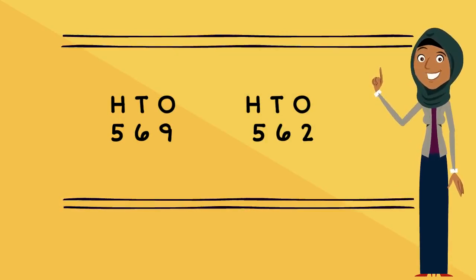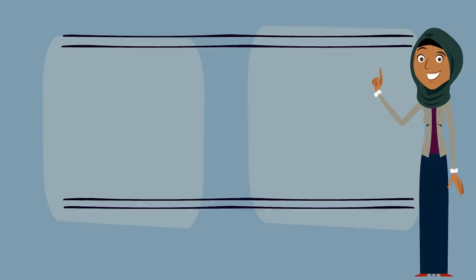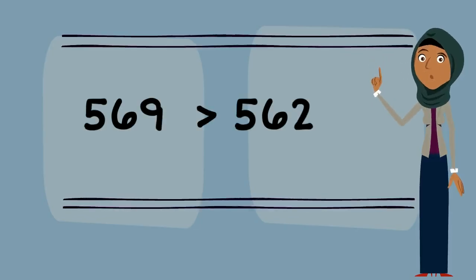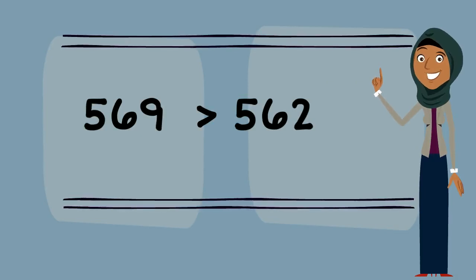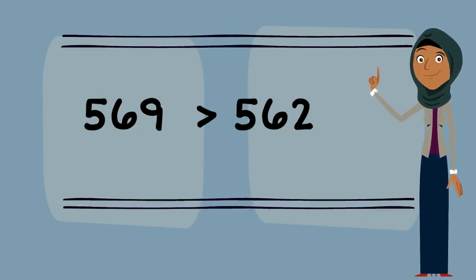Now we need to move to the ones and compare the ones. One has 9, and one has 2. That makes sense and makes it easier. So we can say 569 is bigger than, or greater than, 562.